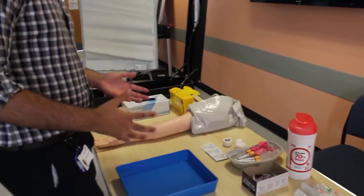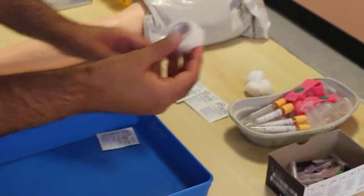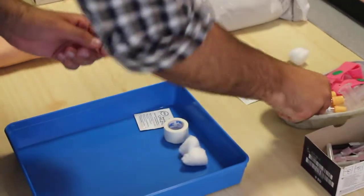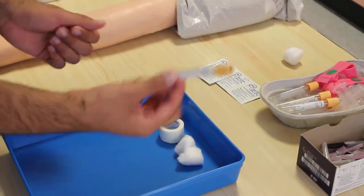After that, prepare your clean tray. Take an alcohol swab, tape, a bit of cotton, and the blood sampling bottle.